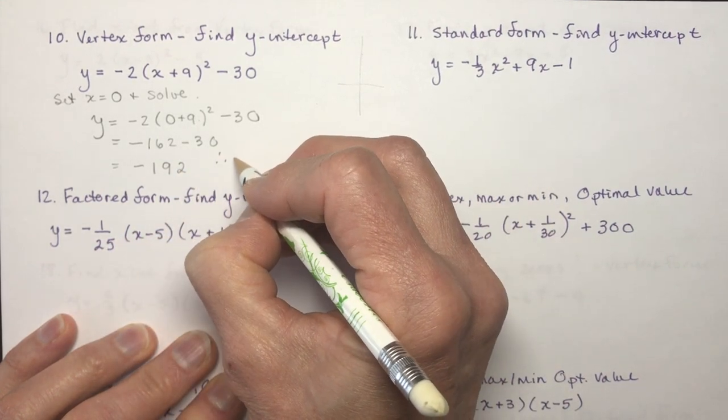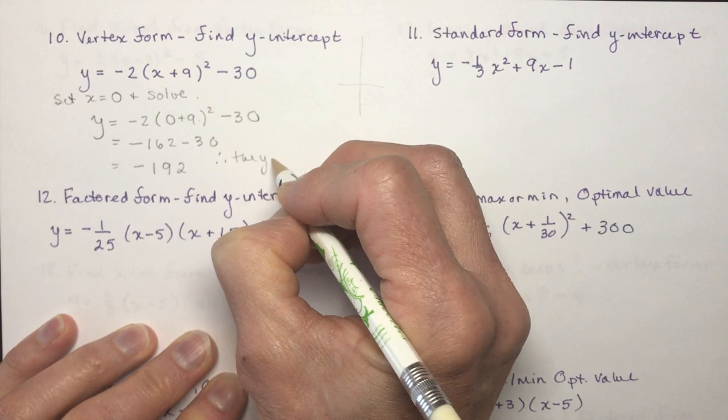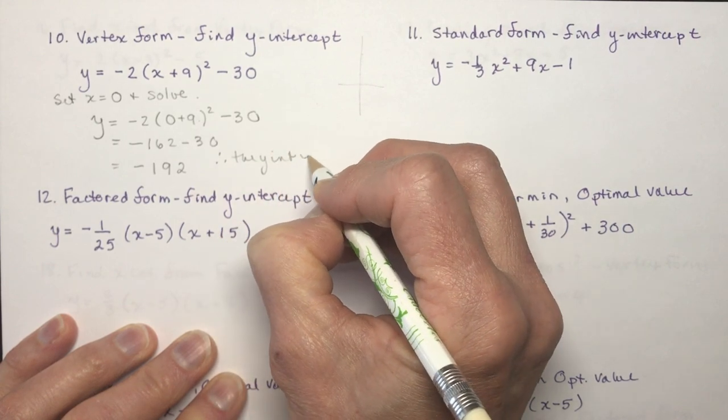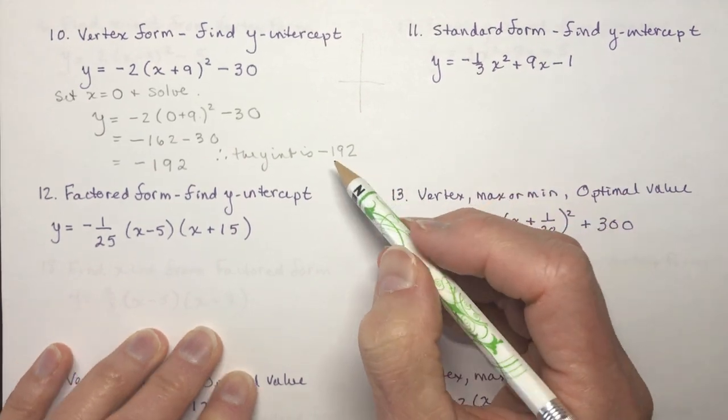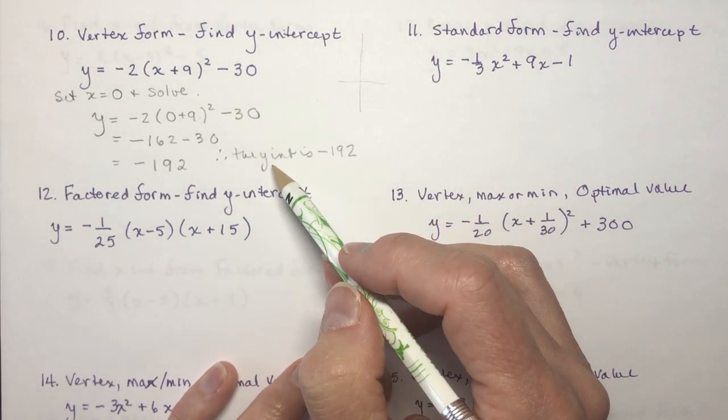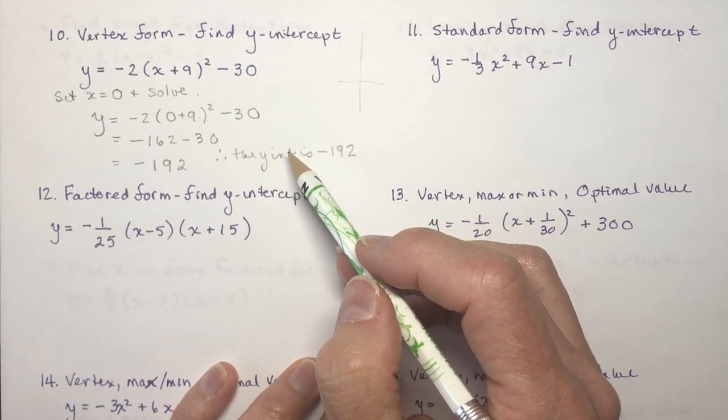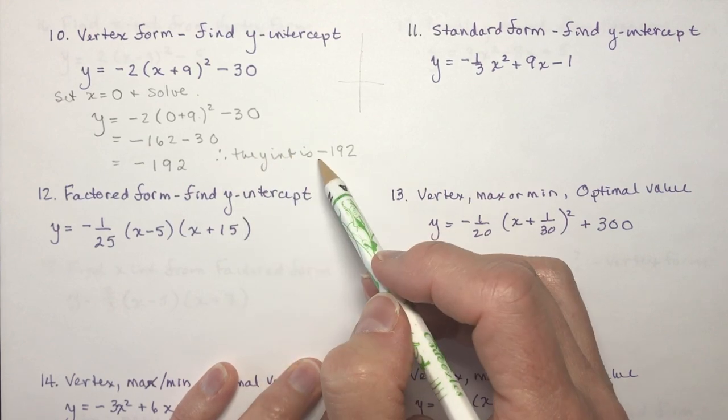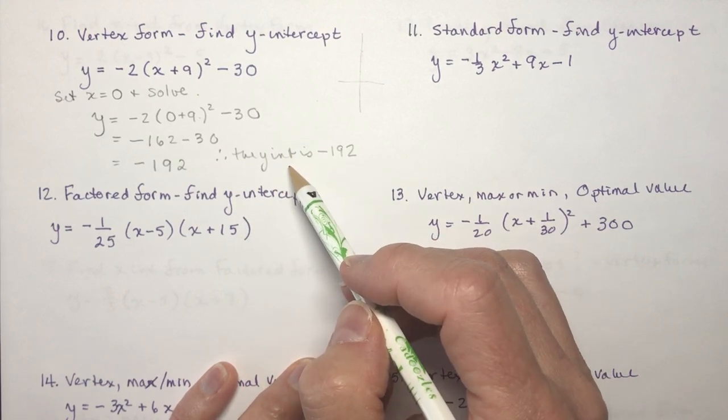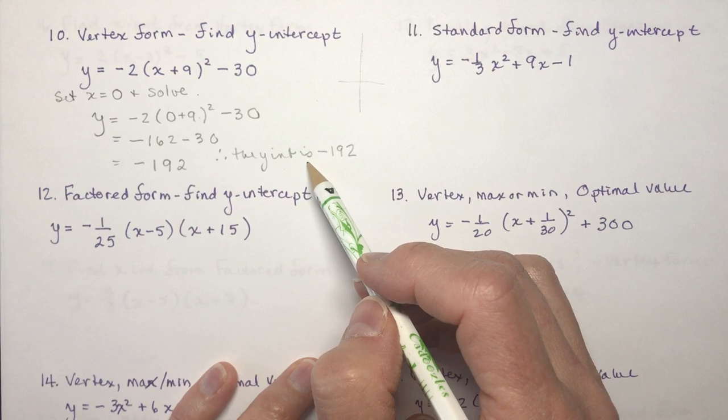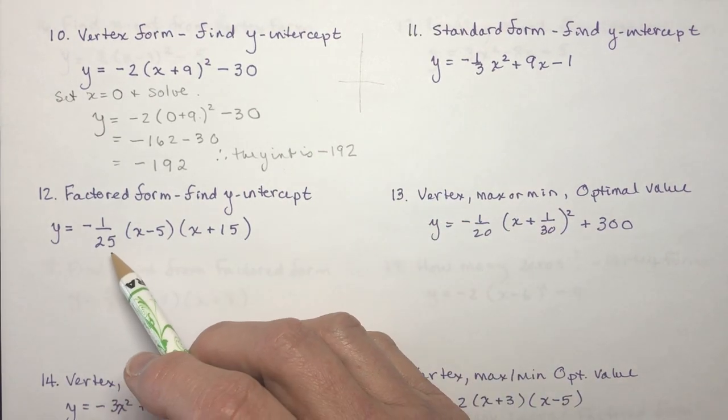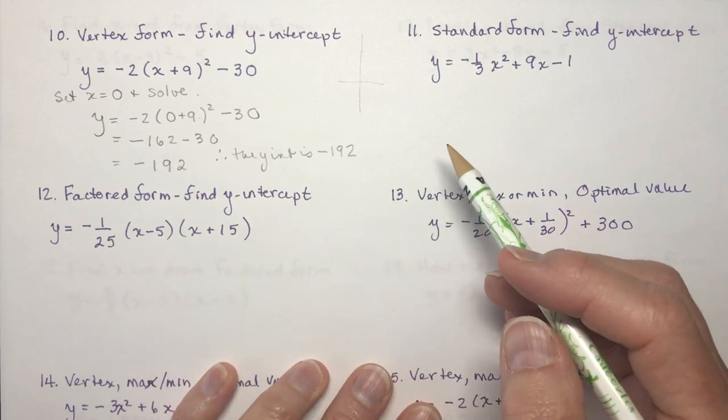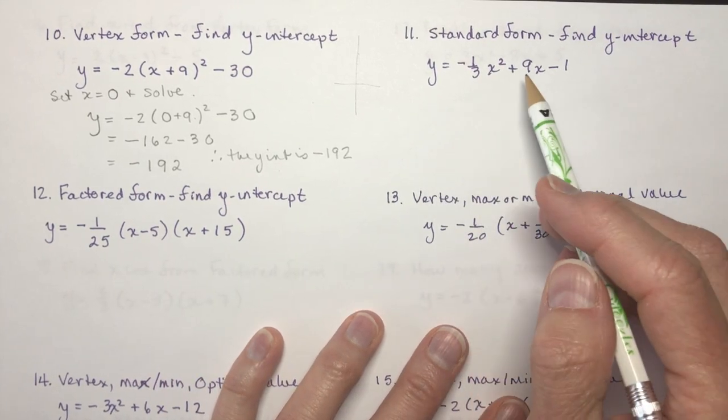So then you'd say, therefore, the y-intercept is minus 192. I always tell my students to write it this way. When you say what the x-intercept is, what is the y-intercept, you state them. Because if you say the y-intercept is y equals minus 192, you're actually talking about the equation of a line. A little bit of semantics there.